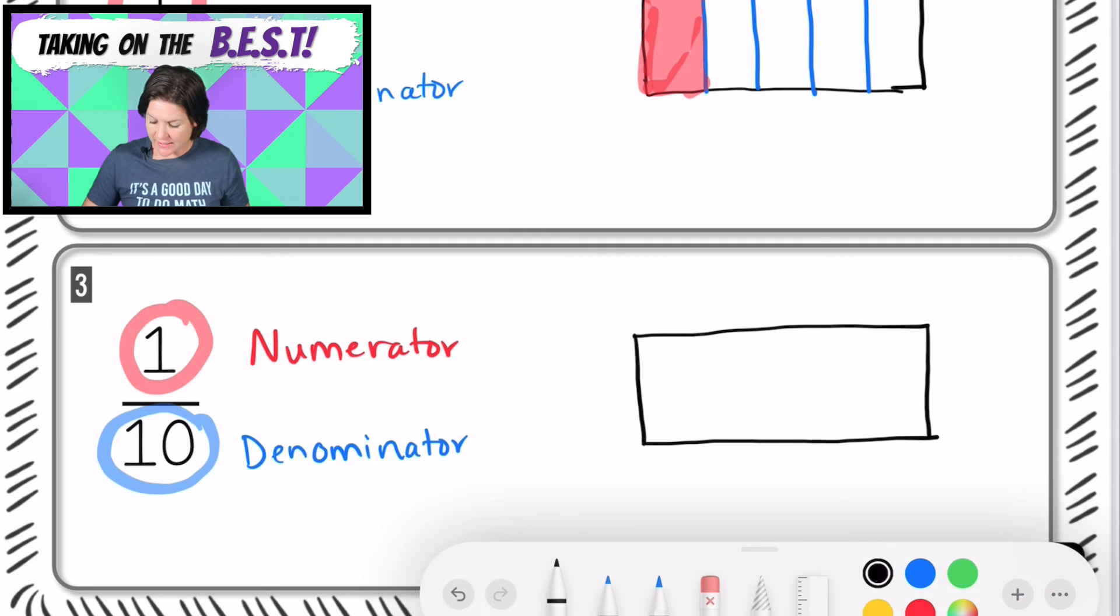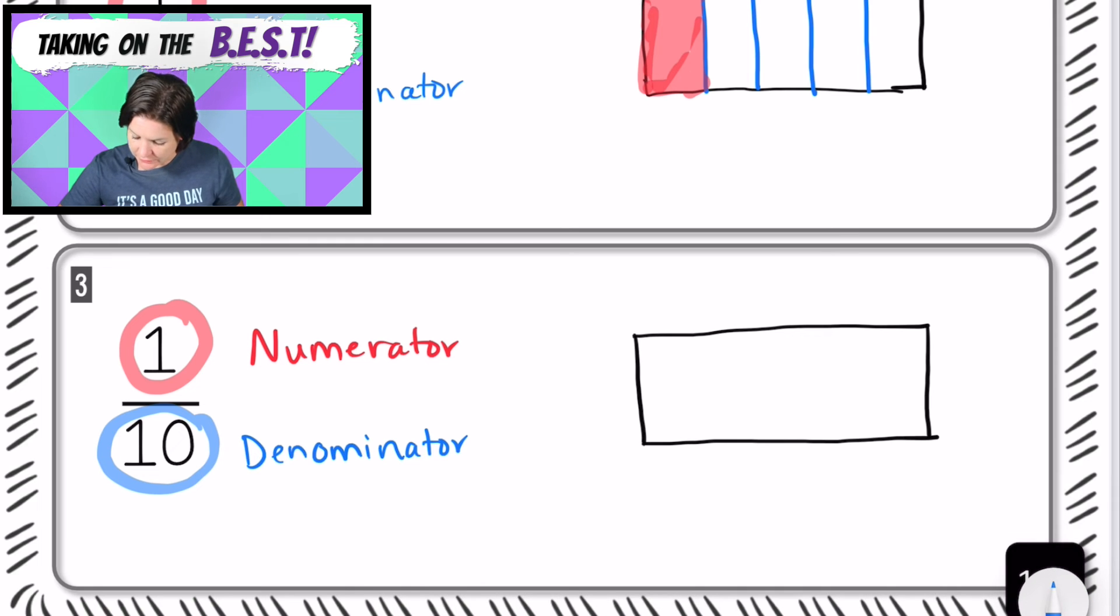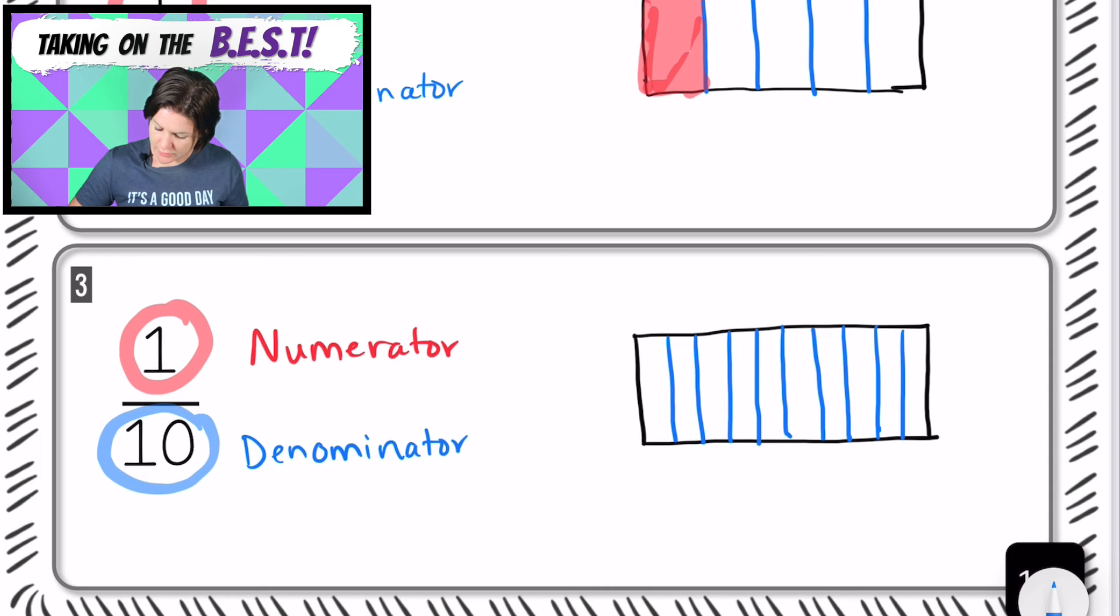And we know that we have a denominator of ten. What I'm going to do, because I know that ten is actually an even number, is I'm going to go ahead and split it down the middle, just like that, and make five parts on one side and five parts on the other side to equal a total of ten parts. And it might take you a couple times to get it nice and neat, and that is okay.